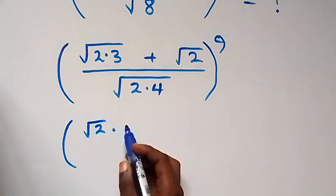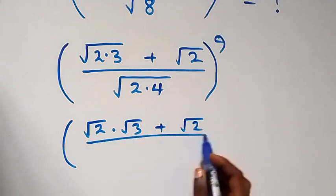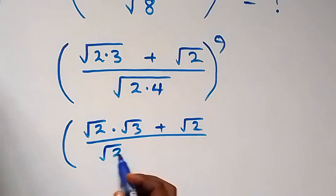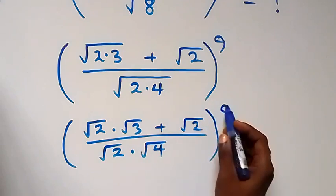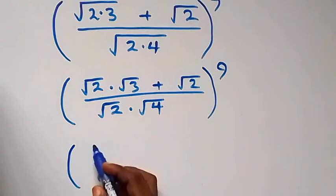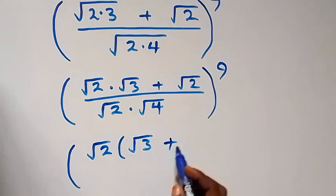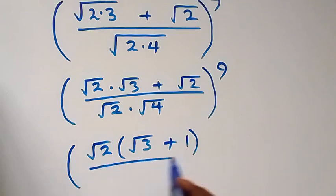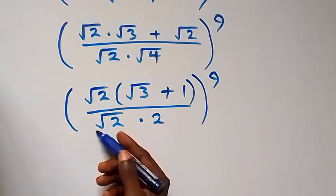From here we can separate this, and this becomes root 2 times root 3 plus root 2, divided by root 2 times root 4, all raised to power 9. From here, root 2 is common when we factor that out. We have root 2 into bracket (root 3 plus 1), divided by root 2 times root 4, which is 2, all raised to power 9. Root 2 cancels each other.